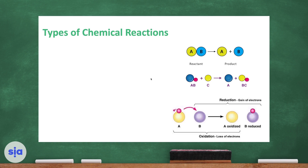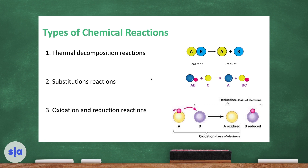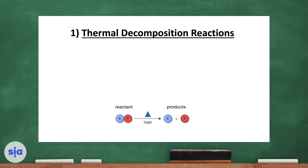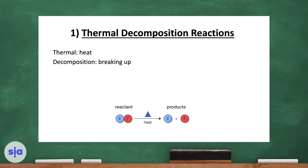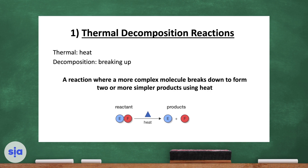We have three types of chemical reactions: thermal decomposition reaction, substitution reaction, and oxidation-reduction reaction. We will now discuss the first type: thermal decomposition reaction. The word 'thermal' means heat, and 'decomposition' means breaking up — so we are breaking something up using heat. It is a reaction where a more complex molecule breaks down to form two or more simpler products.